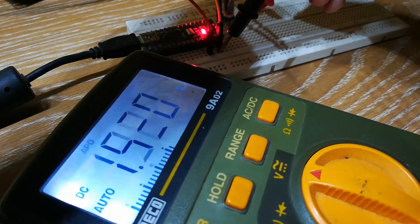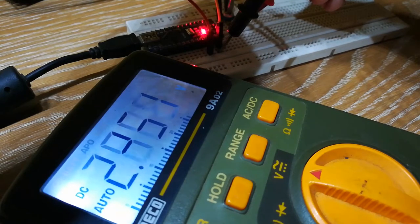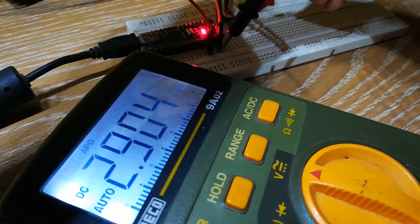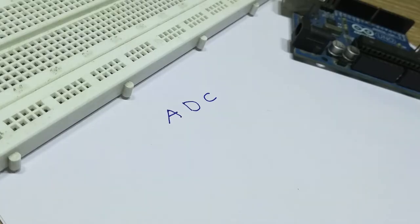A microcontroller cannot understand analog voltage directly, that is why we have to use an analog to digital converter or ADC in short.